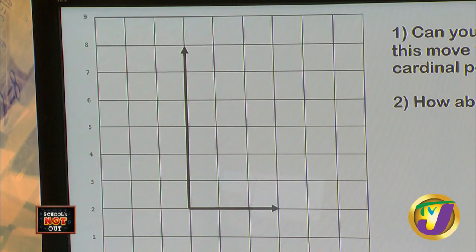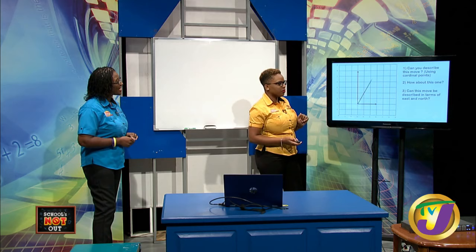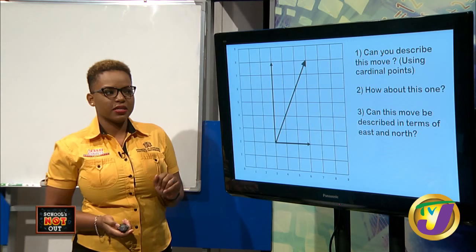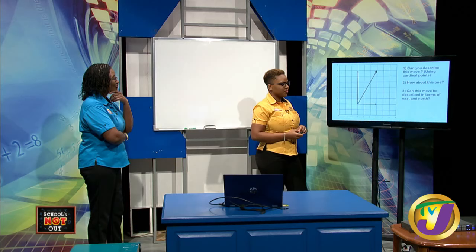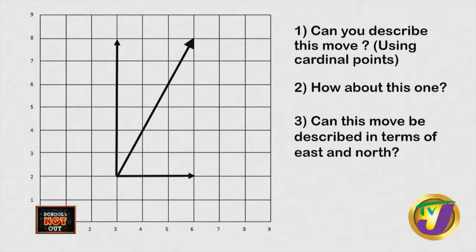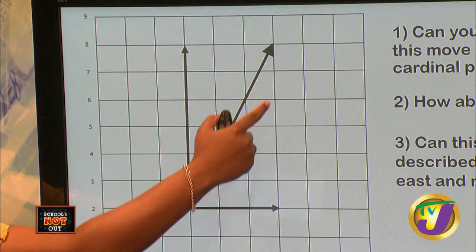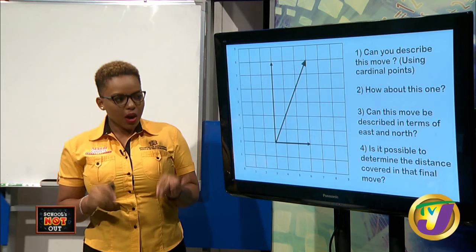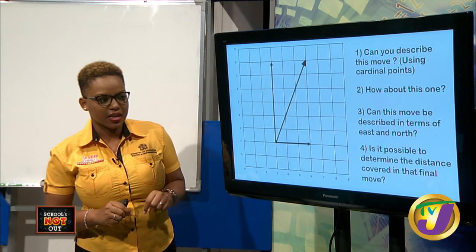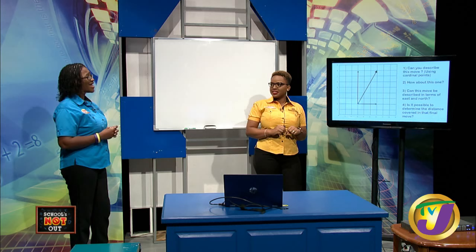One, two, three units — I'll take that. Can this movement be described in terms of east and north? That looks like three units east and six units north — one, two, three units east and then one, two, three, four, five, six units north. Is it possible to determine the distance covered in the final move? I think so.